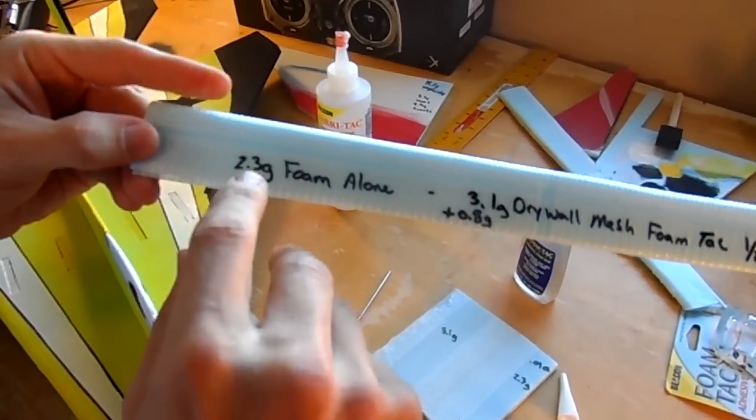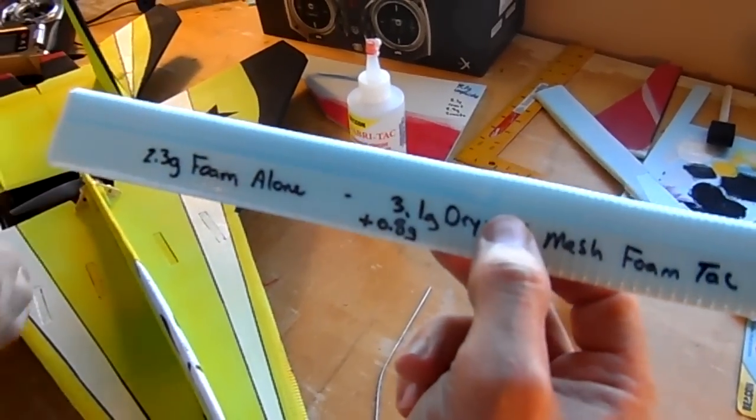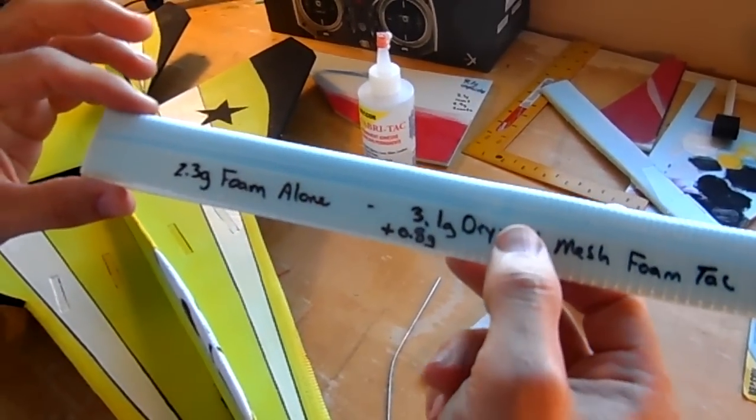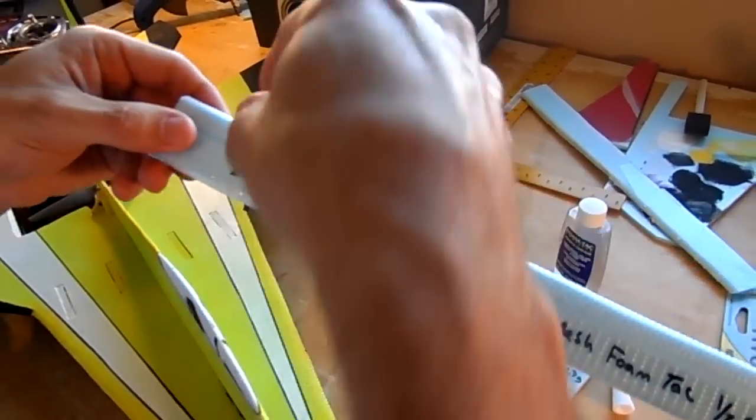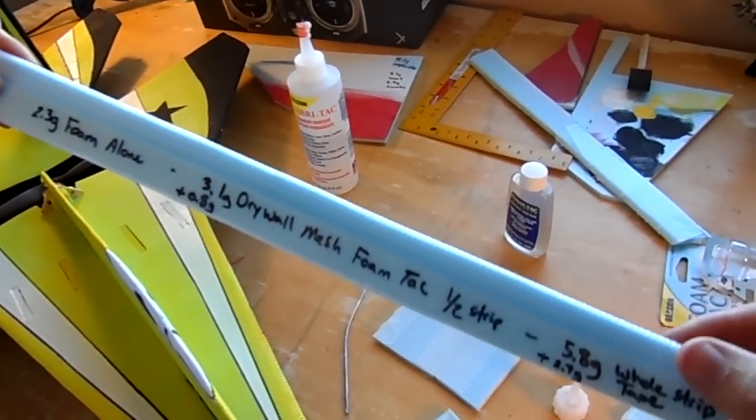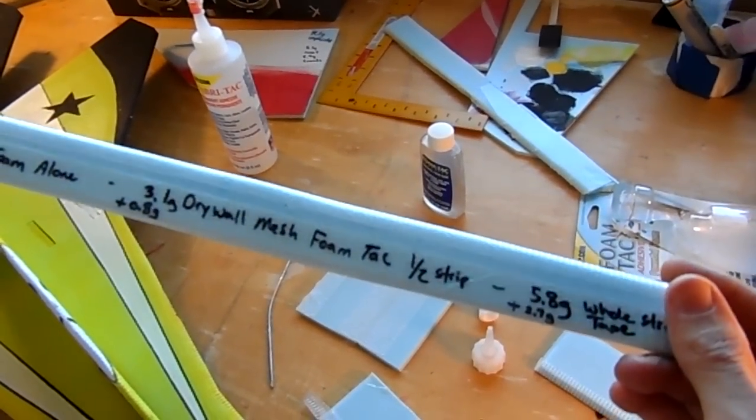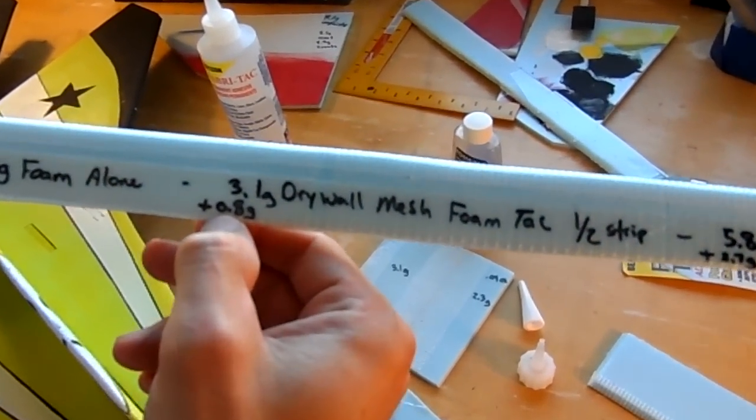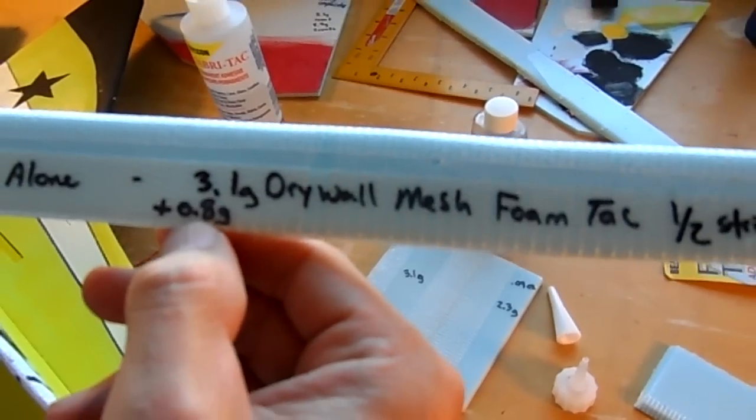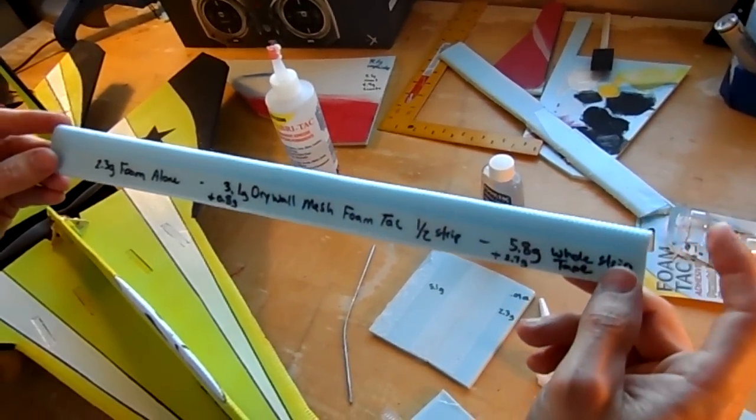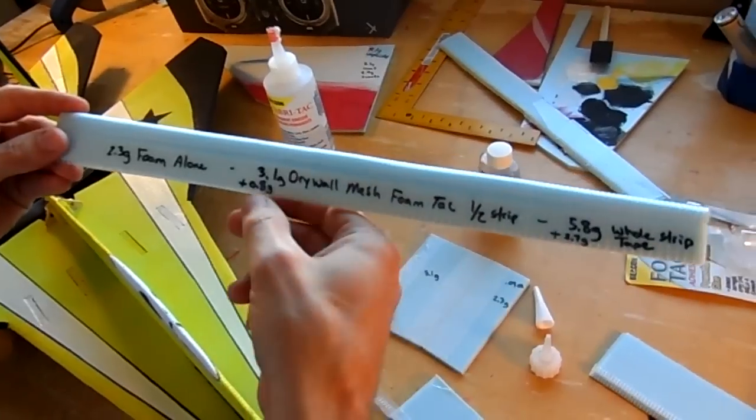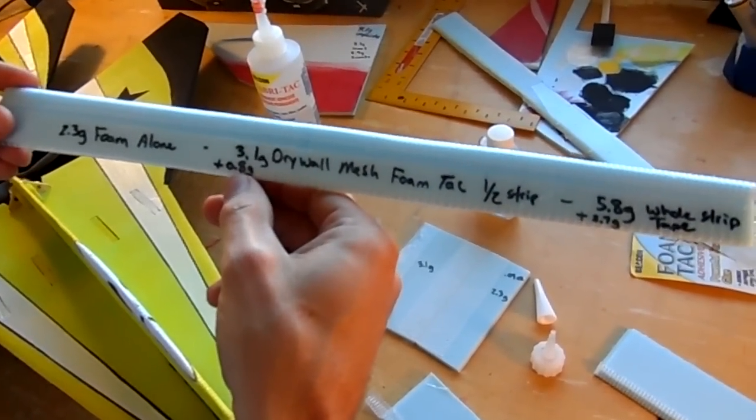This shows the weight. I weighed this piece of foam before I did anything to it, just the bare foam. It weighed 2.3 grams. I reinforced this edge with the drywall mesh and foam tack, and I added 0.8 grams to the total weight, and this is about 18 inches long, so an 18-inch piece of reinforcement added 0.8 grams full length.